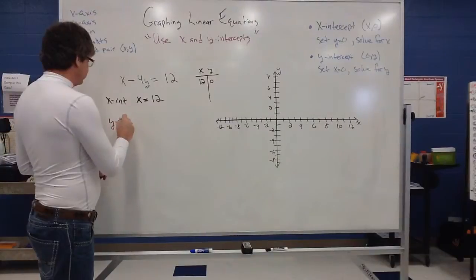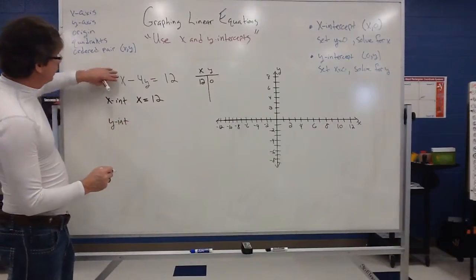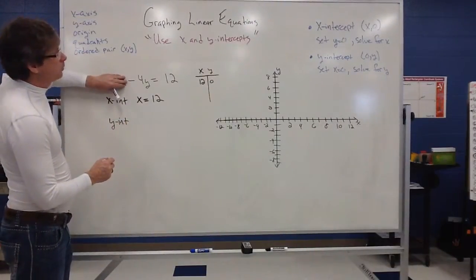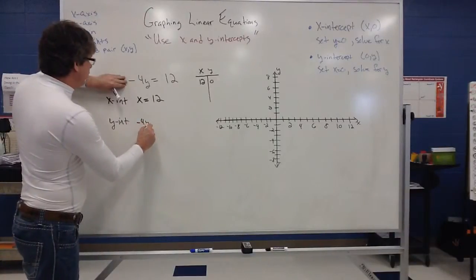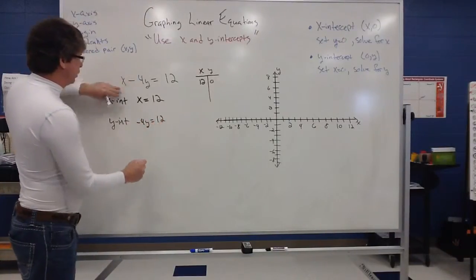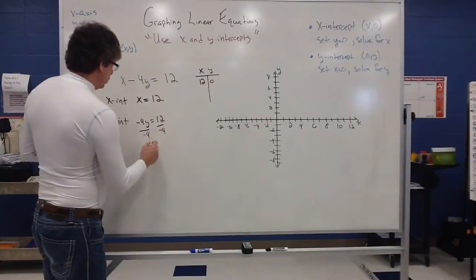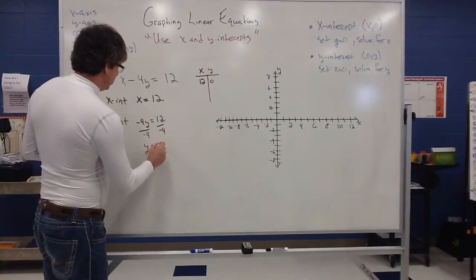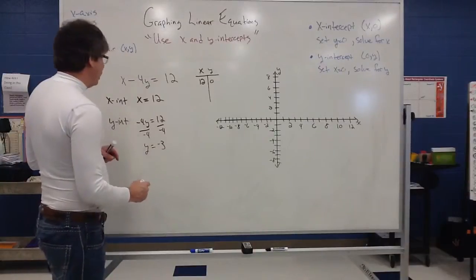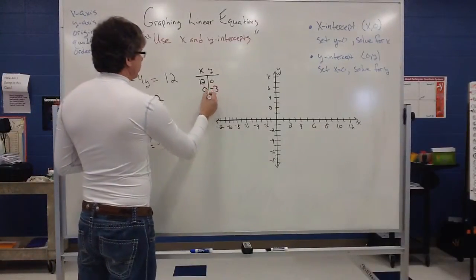The y intercept, we have to set x equals 0. So this term falls out. And what you have is negative 4y is equal to 12. And then if I divide each side by negative 4, I get y equals negative 3. So my y intercept is going to be 0, negative 3.